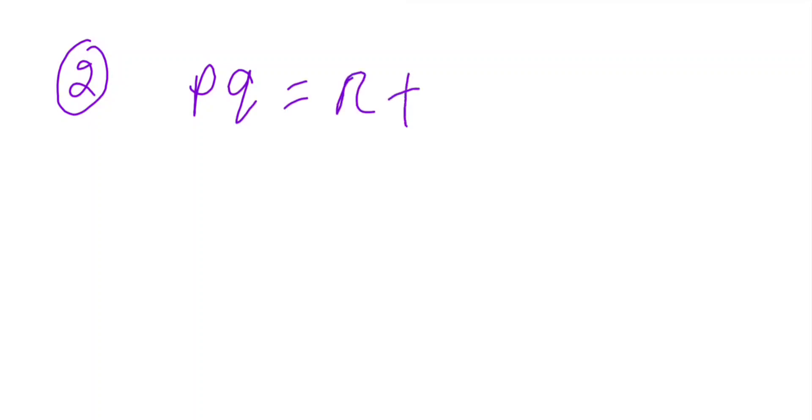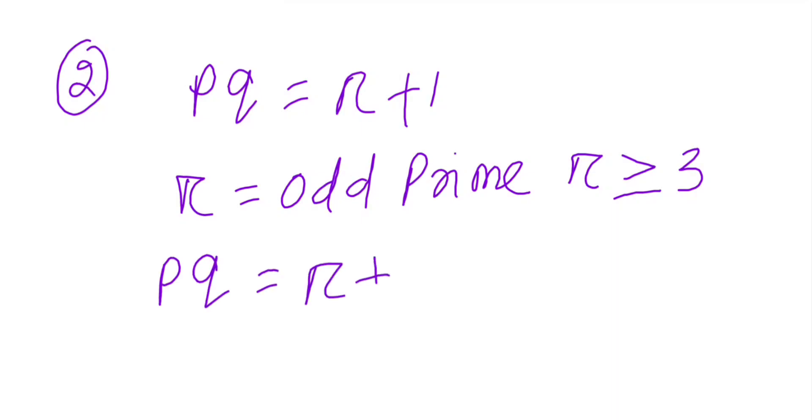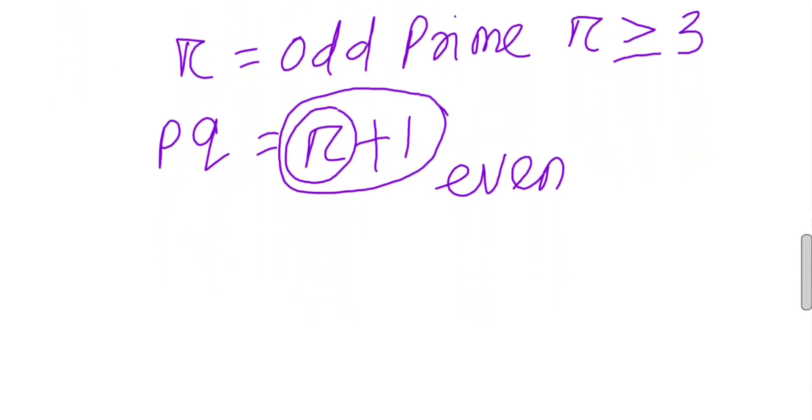pq equals r plus 1. If r is odd prime, then r must be greater than or equal to 3, whatever the value may be. If you see here, if this quantity is odd, then this total quantity will be even, because r plus 1 is even. Hence pq must be some even quantity.